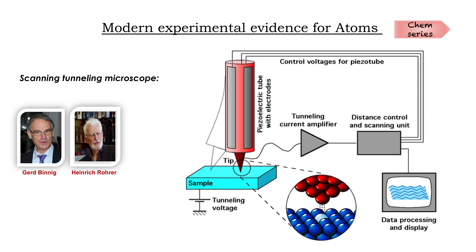In the experiment, the scanning tunneling microscope has a sharp metal tip, usually made of tungsten, platinum, or gold, brought very close to the sample surface. An electric current flows, and as the tip moves across the surface, its height is continually adjusted to keep the current flow constant. By recording the fluctuations in the height of the tip, a map of hills and valleys is obtained. The data is processed using a computer to reveal an image of atoms on the surface — this is how the scanning tunneling microscope works.